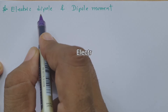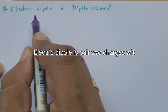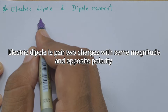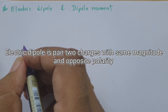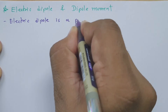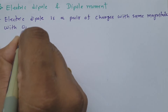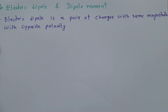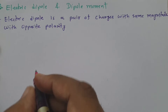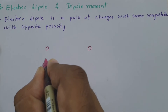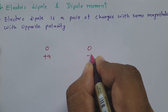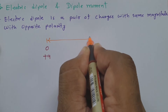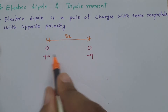An electric dipole is a pair of charges with the same magnitude but opposite polarity. If I have two charges — one with magnitude plus q and the other with magnitude minus q — and these two charges are separated by a distance of twice a, then this is what we call an electric dipole.